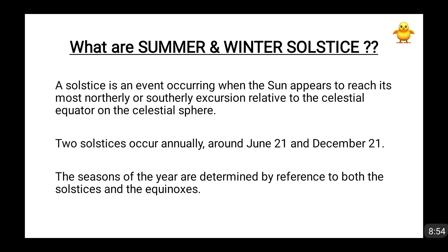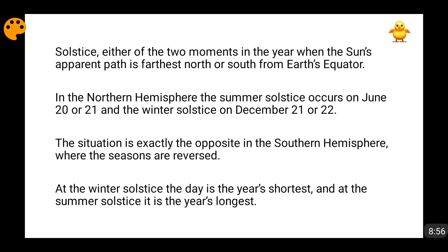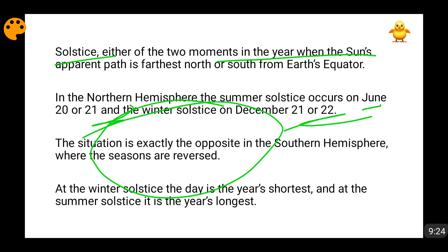Some more facts: solstices are those moments when the Sun is at the extreme latitude of the Earth — northwards at the Tropic of Cancer, southwards at the Tropic of Capricorn. The dates are June 20–21 for summer solstice and December 21–22 for winter solstice. The seasons are also reversed — whatever seasons exist in the Northern Hemisphere, exactly the opposite seasons will be in the Southern Hemisphere.